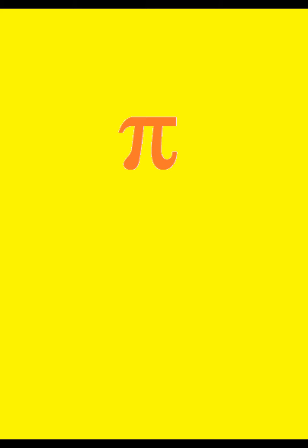The concept of pi, which represents the ratio of a circle's circumference to its diameter, has been known to humanity for thousands of years, and its discovery cannot be attributed to a single individual. The understanding and calculation of pi have evolved over time through the contributions of various civilizations and mathematicians.